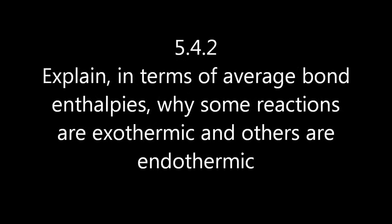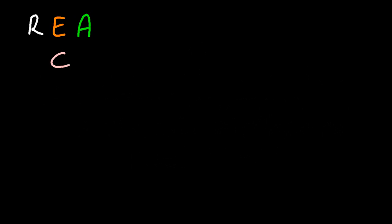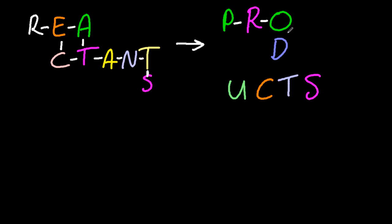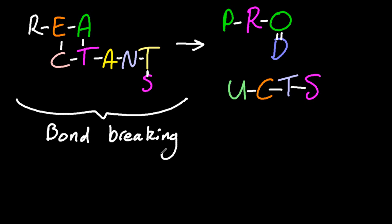Okay then, average bond enthalpies. Well, everything has to be a gas, otherwise you can't use this method. But let me just sketch out this little reactants turning to products diagram. Alright then, so for the reactants, we're going to have to break those bonds apart.